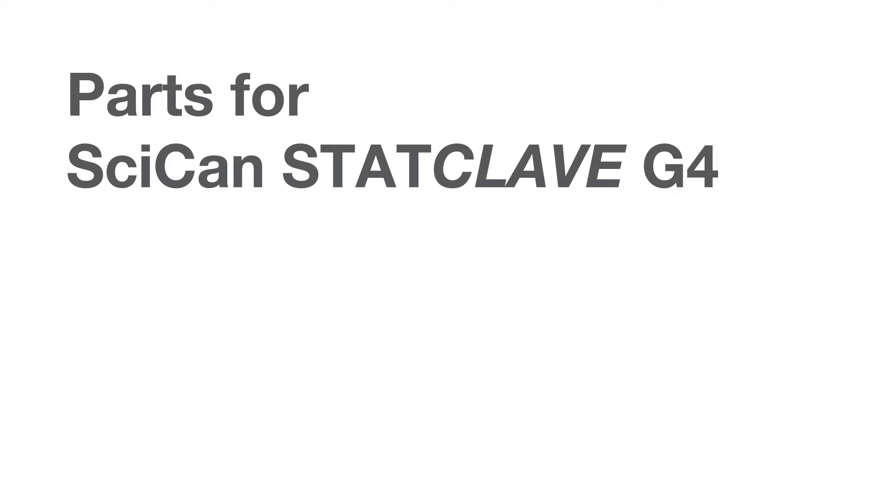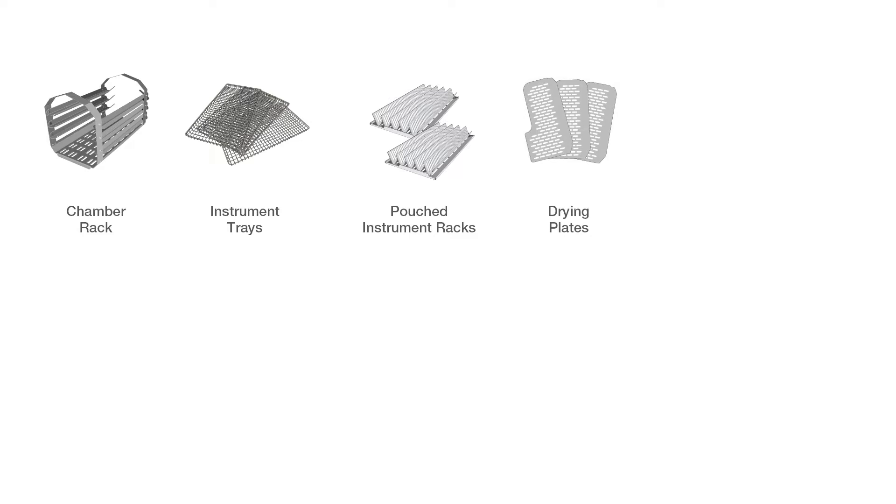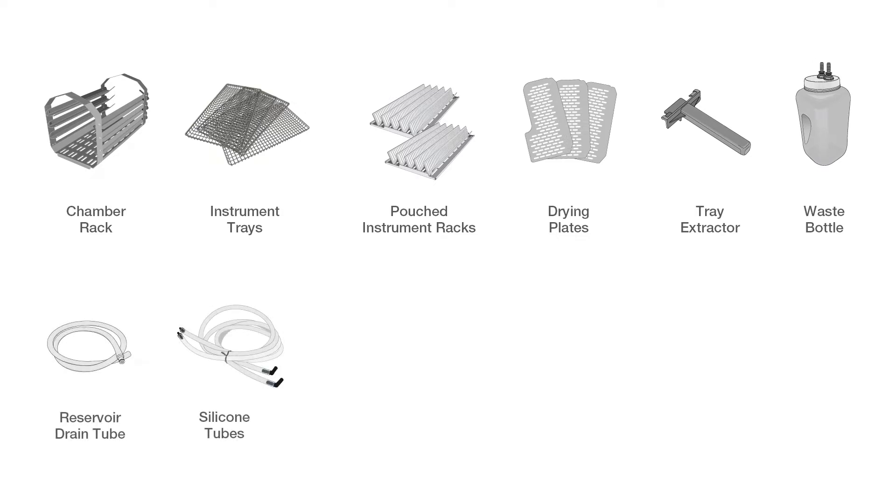Your StatClave comes with the following items: chamber rack, stainless steel wire instrument trays, rack for pouched instruments, drying plates for cassettes, tray extractor with door unlocking pin, waste bottle, reservoir drain tube, two silicone exhaust tubes with elbow connectors, direct-to-drain kit, memory stick, power cord, and operators manual.